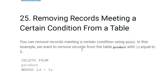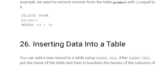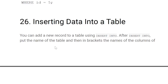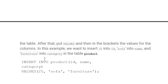Removing records meeting a certain condition: use DELETE FROM with a WHERE clause. For example, DELETE FROM product WHERE id = 5 — only the record where id equals 5 will be deleted from the product table.